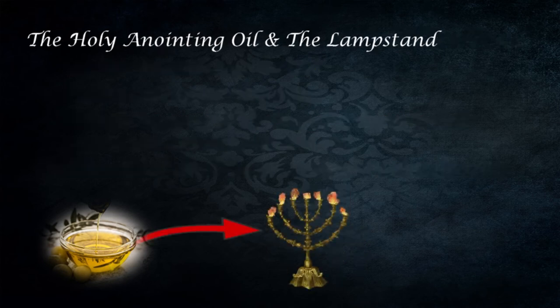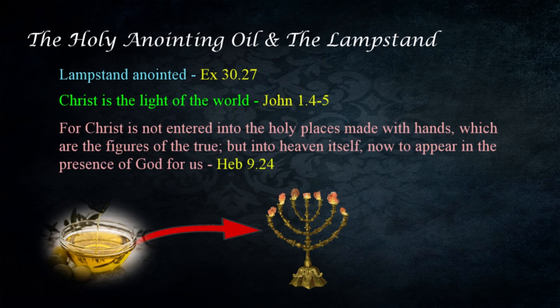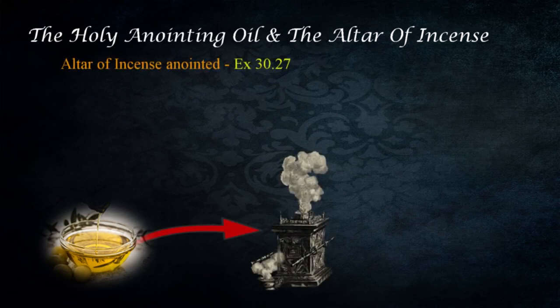The lampstand, providing light in the holy place, reminds us of the guidance provided by God in his presence, and was anointed with the holy anointing oil in Exodus 30:27. Christ is identified as the light of the world in John 1:4–5. Christ brought the initial revelation of the gospel to the world, and through him the message was recorded and preserved for all time. The writer of Hebrews explains: "For Christ is not entered into the holy places made with hands, which are the figures of the true, but into heaven itself, now to appear in the presence of God for us." — Hebrews 9:24. Christ has shown us the path to the Father and eternal life, just as the lampstand illuminated the holy place on the way to the most holy place.